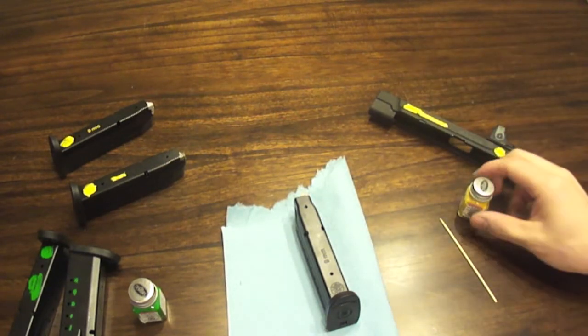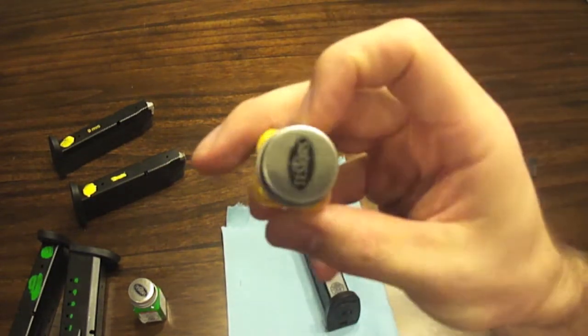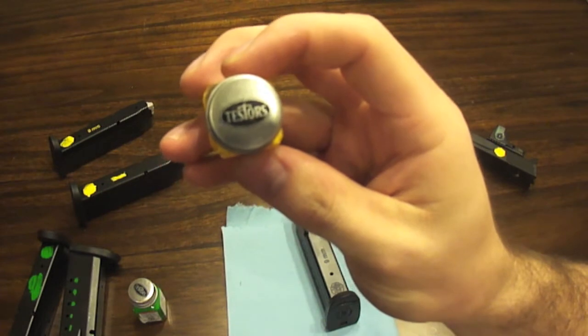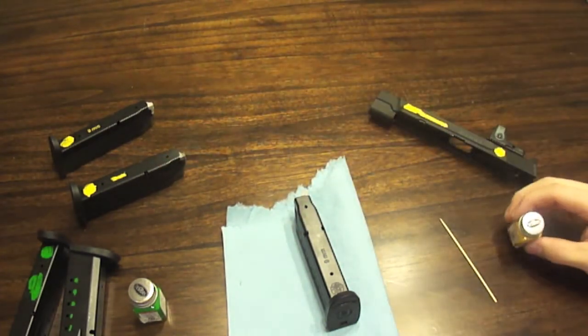I looked up online about painting the letters that are laser etched or roll marked into the slide and they suggested this Testers model paint. You can get a bunch of different colors like this at Walmart.